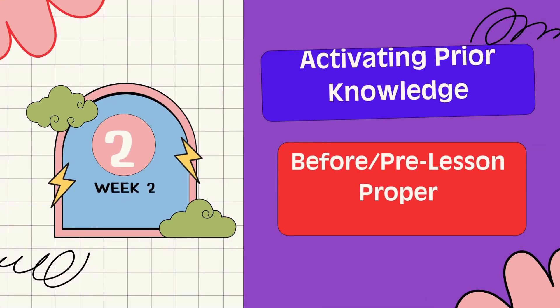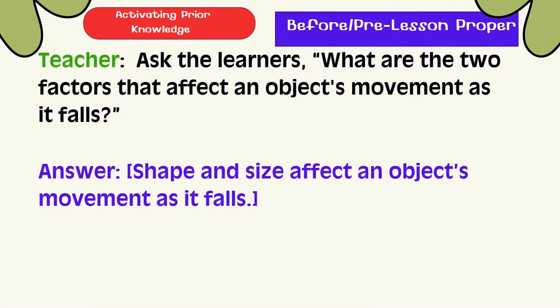Activating Prior Knowledge. What are the two factors that affect an object's movement as it falls? The answer is: Shape and Size affect an object's movement as it falls.